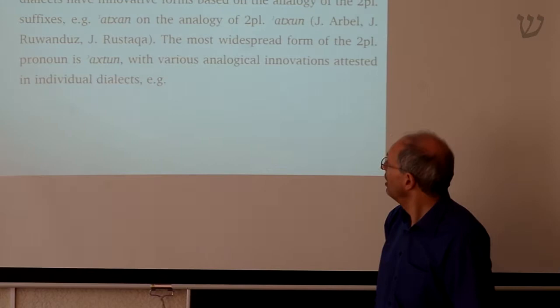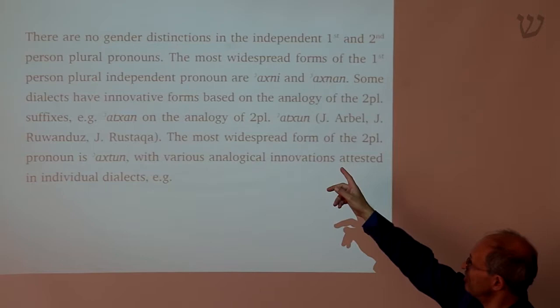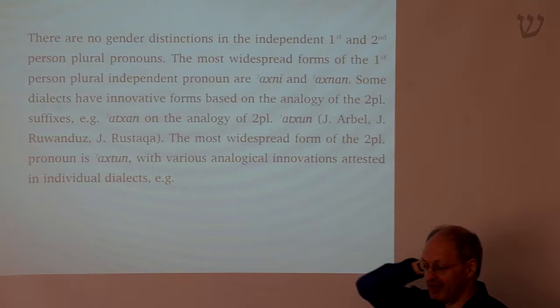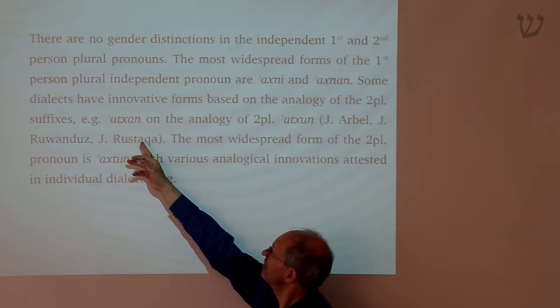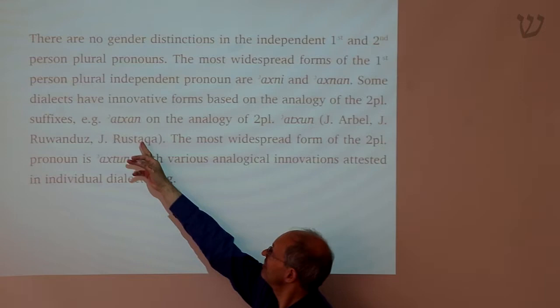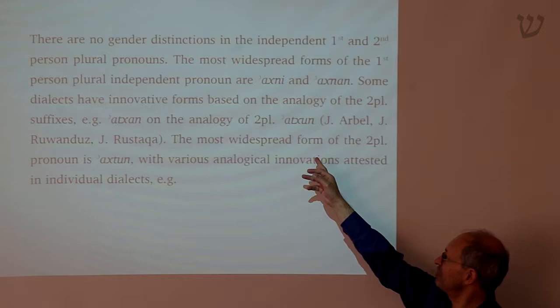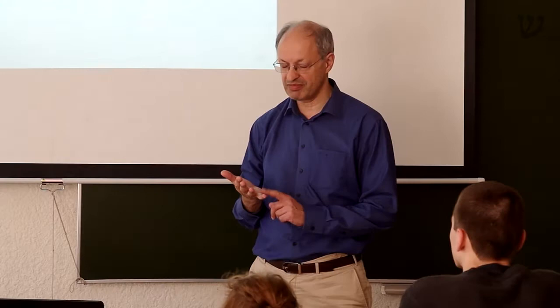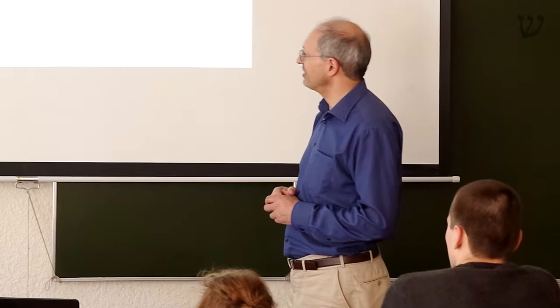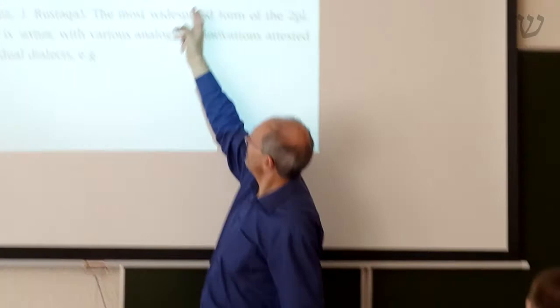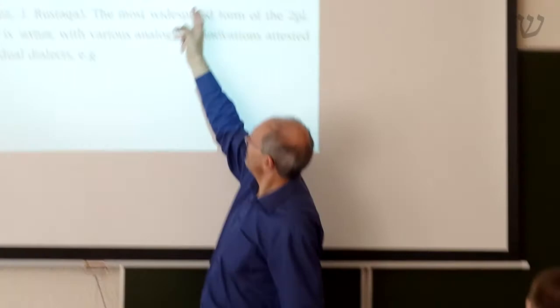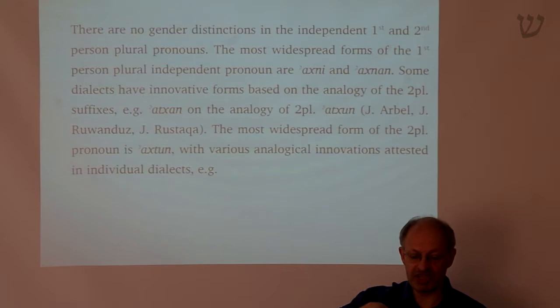The most widespread form of the first person plural — 'we' — is 'achni' or 'achnan', which will sound familiar from earlier Aramaic. But there are some dialects which have the form 'atchan', which seems to be a form based on analogy with the second person plural 'atchun'. Some dialects use the same 'atchun' for 'you plural', and by analogy with 'atchun', they say 'atchan' instead of 'achni', based on analogy with the second person plural.